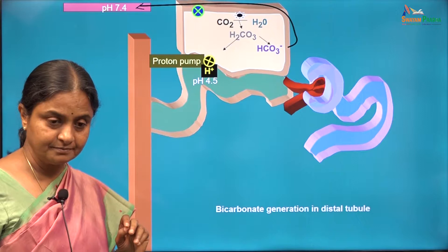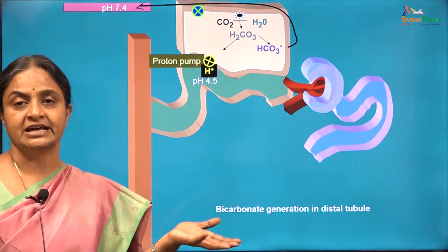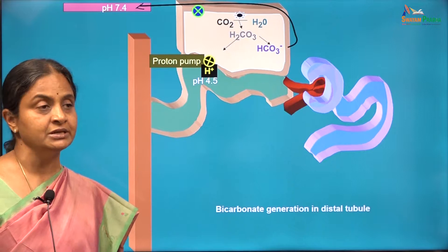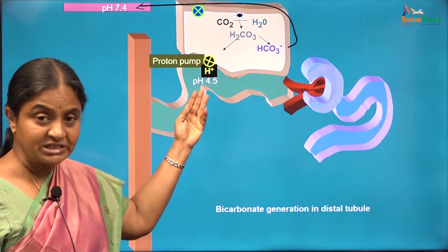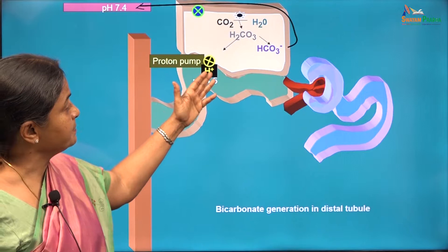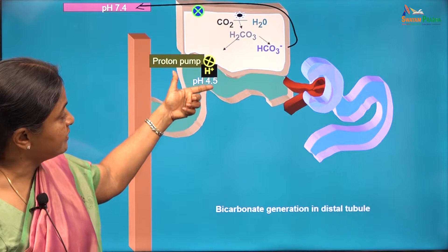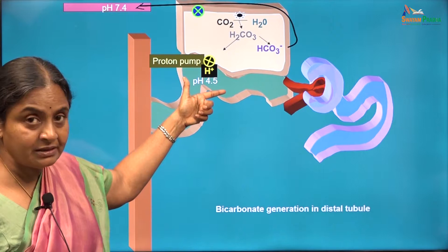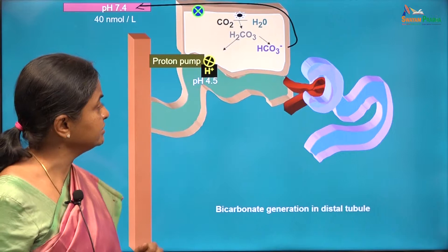Every pump will have a certain gradient against which it can pump — a 5 HP motor can pump to a certain height, a 10 HP motor to a greater height. The pH of plasma is 7.4 and the lowest recordable pH in urine is 4.5 to 5, which means this pump can achieve a 1000-fold gradient of protons — a difference of about 3 pH units. The proton concentration in tubular fluid can be 3 orders of magnitude higher than in plasma. In plasma, the proton concentration is 40 nanomoles per litre; therefore in tubular fluid this can go up to 40 micromoles per litre.